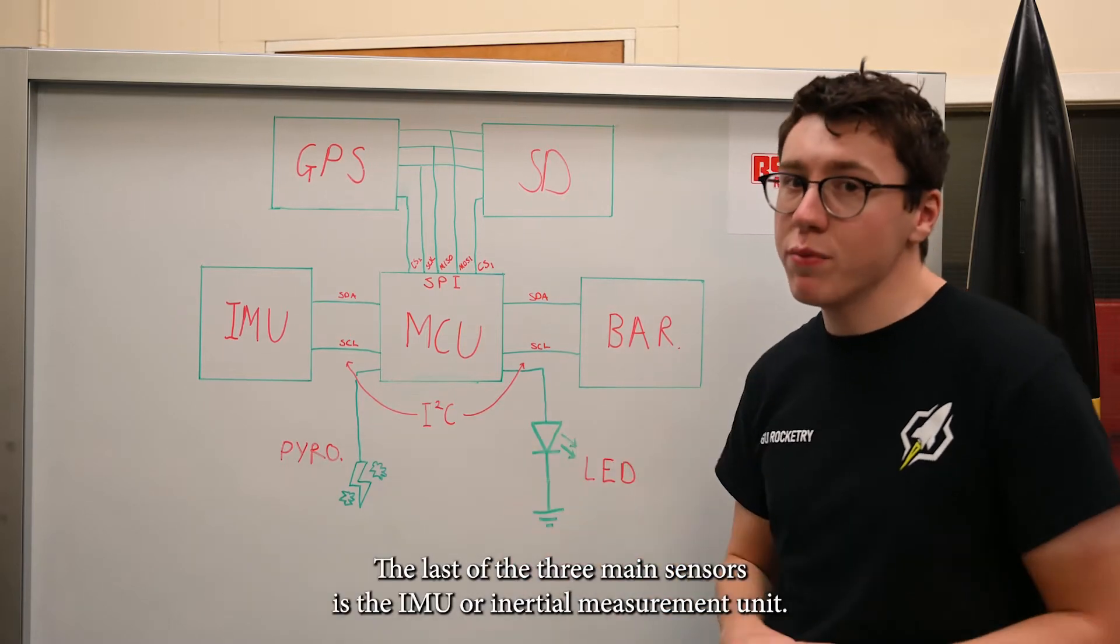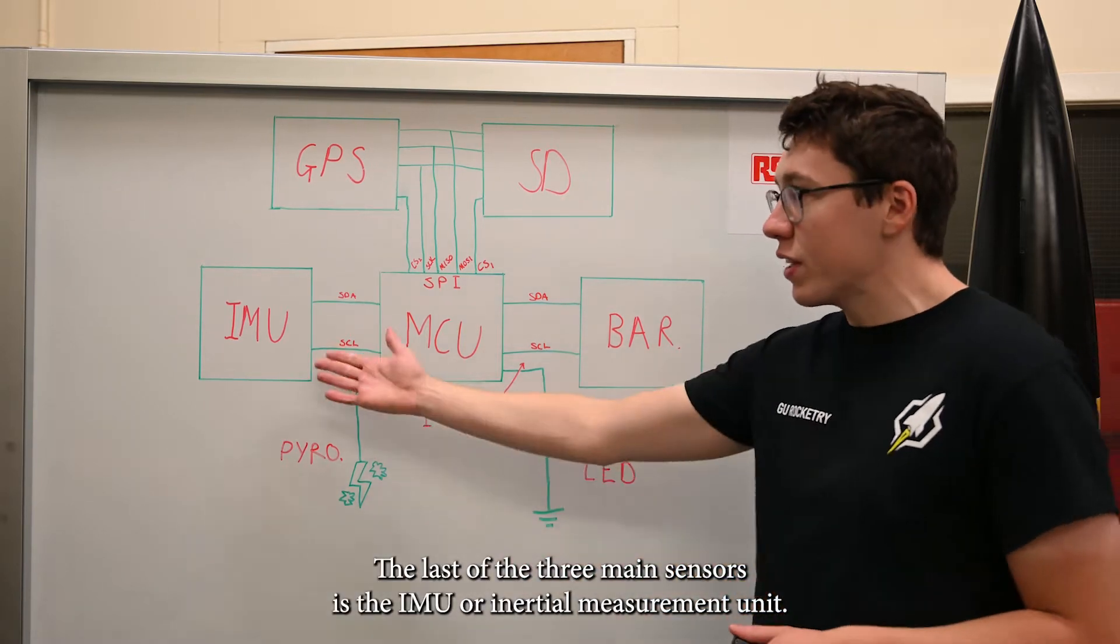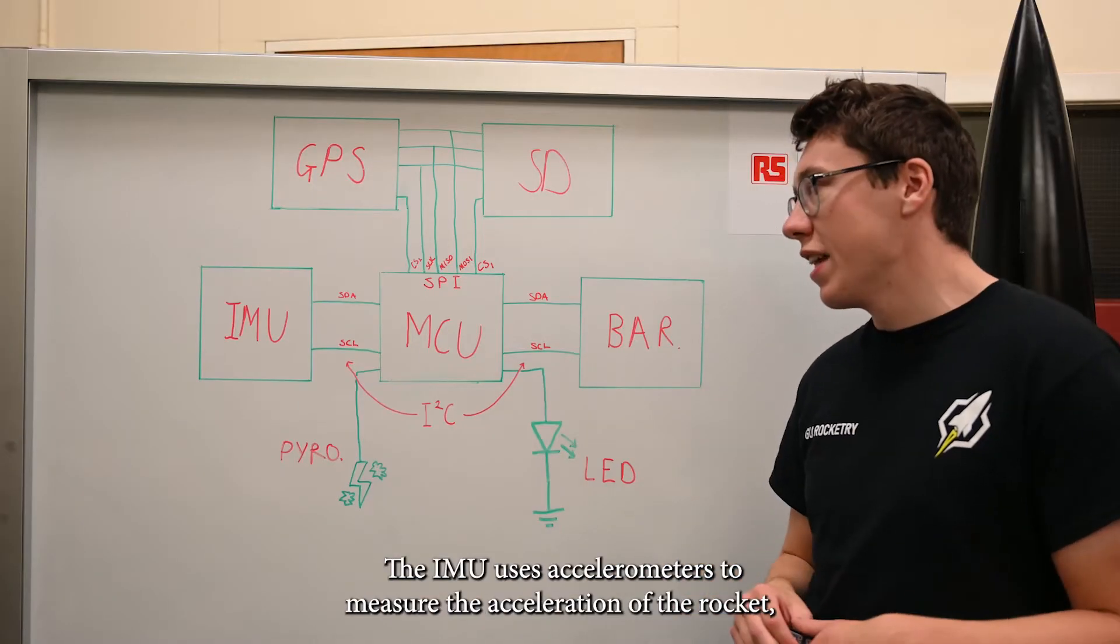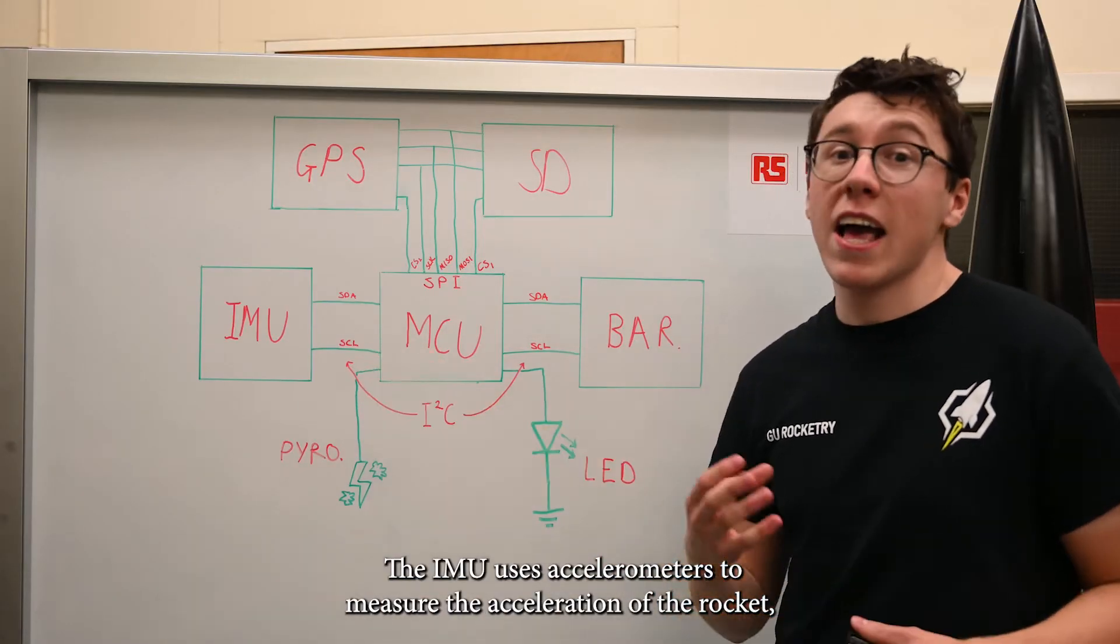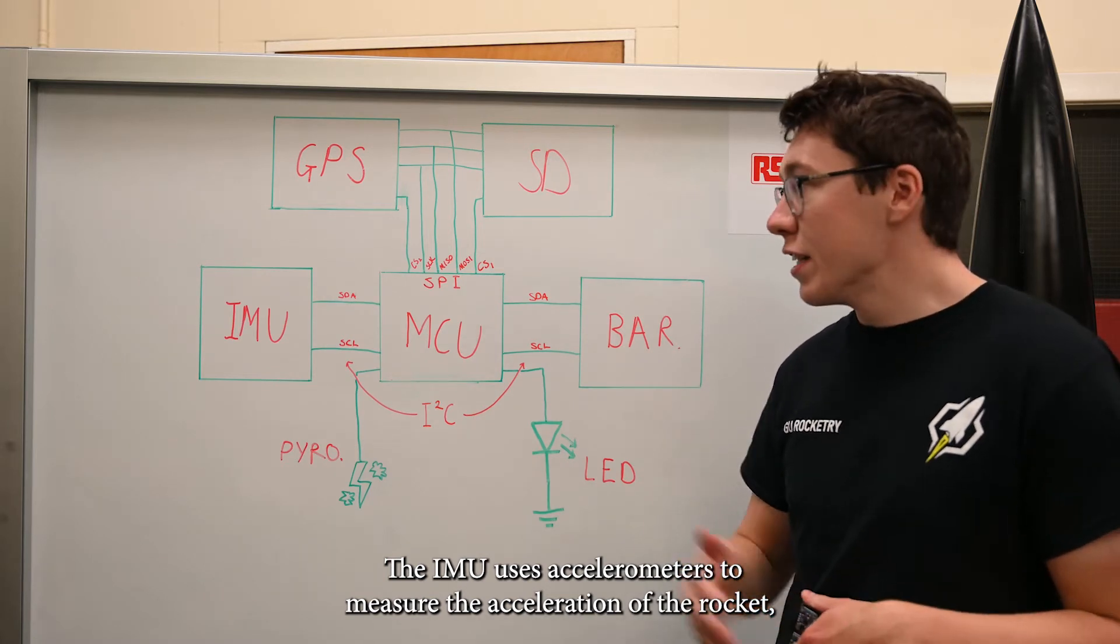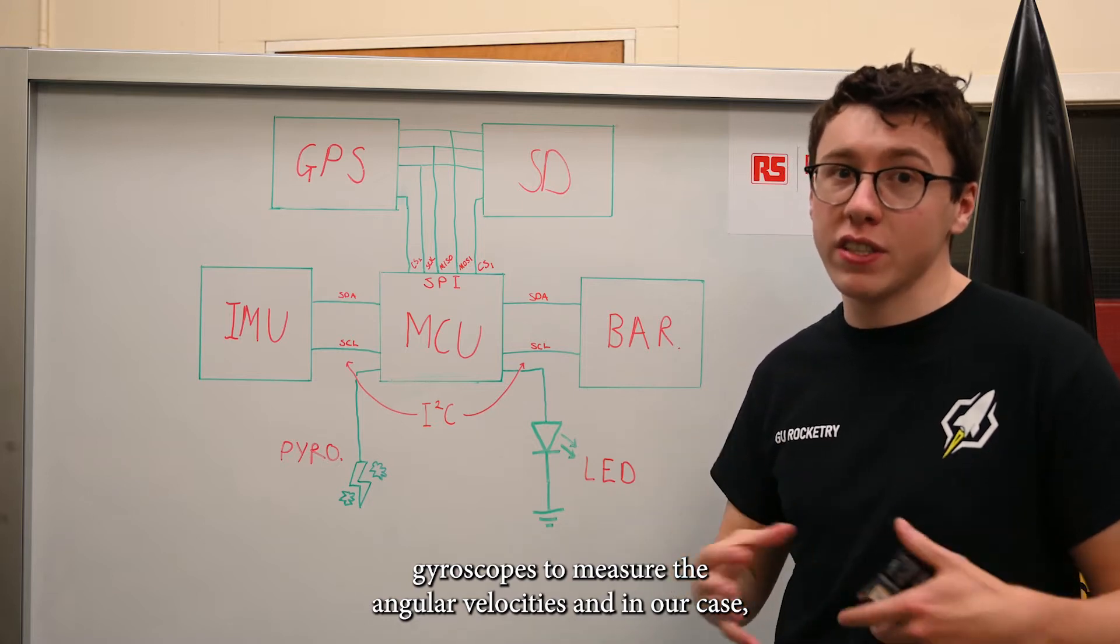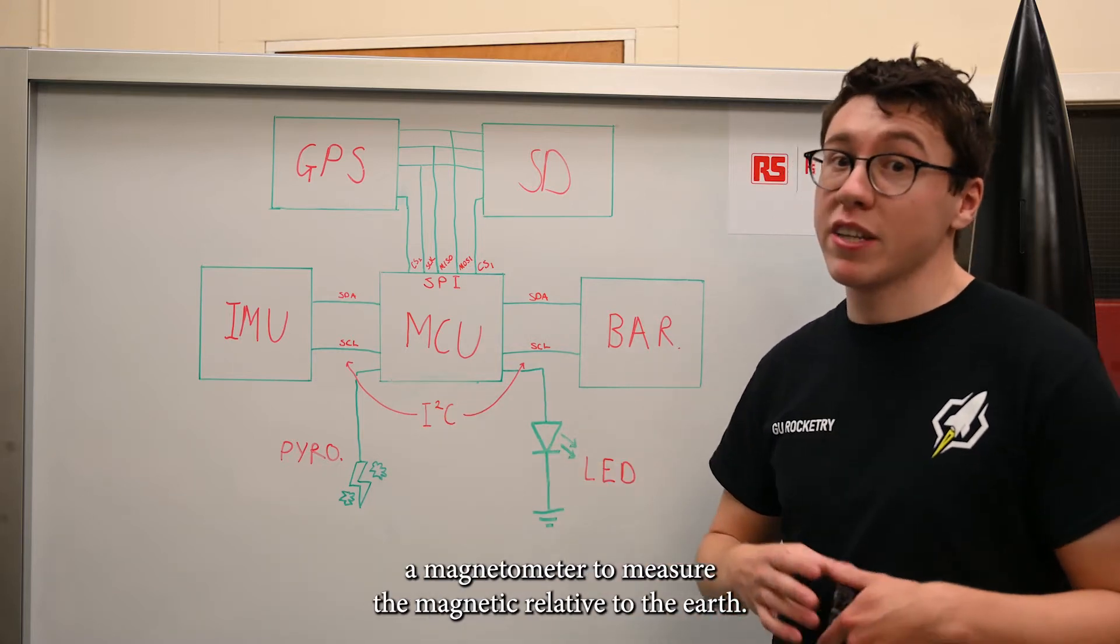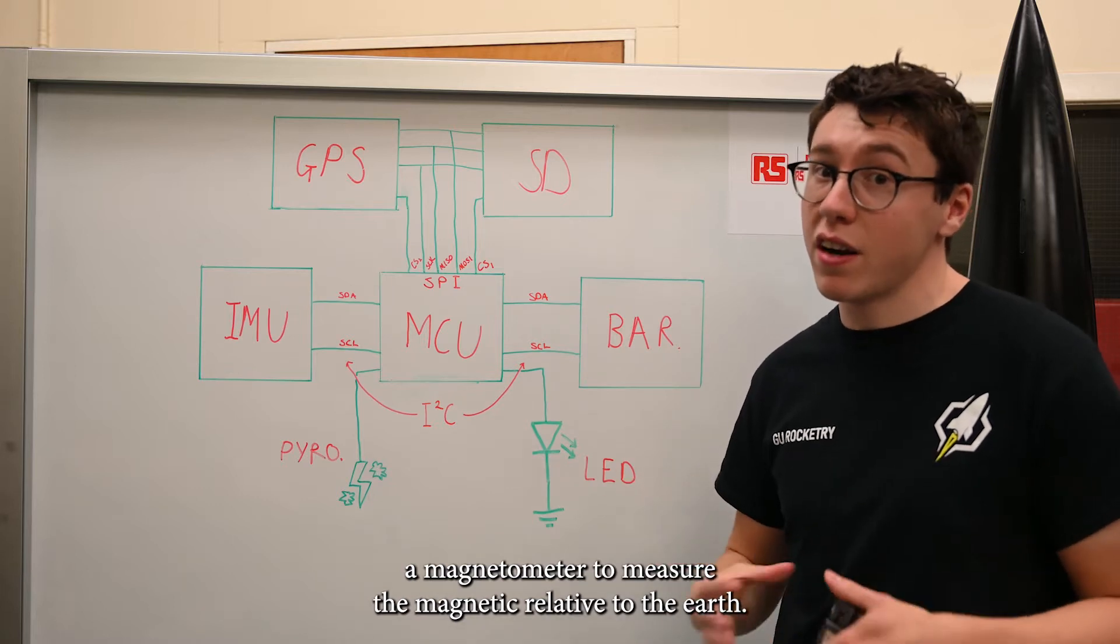And the last of the three main sensors on board is this one right here, the IMU or Inertial Measurement Unit. This device uses accelerometers to measure the acceleration of the rocket, gyroscopes to measure the angular velocity of the rocket, and in our case, a magnetometer to measure the magnetic field relative to the Earth.